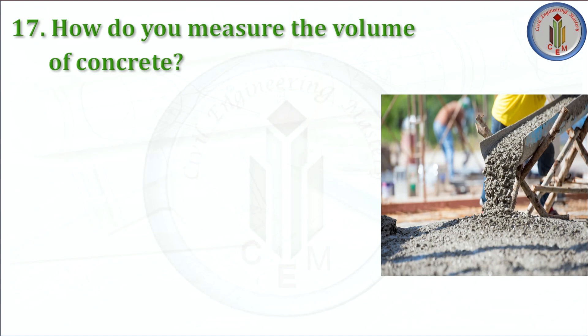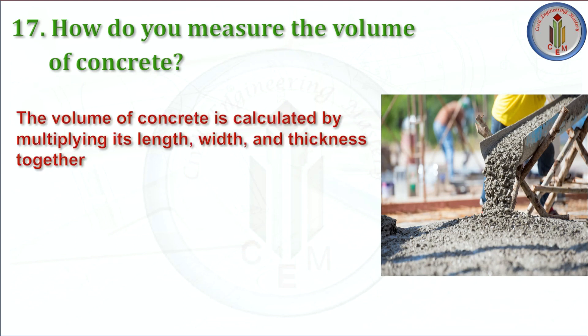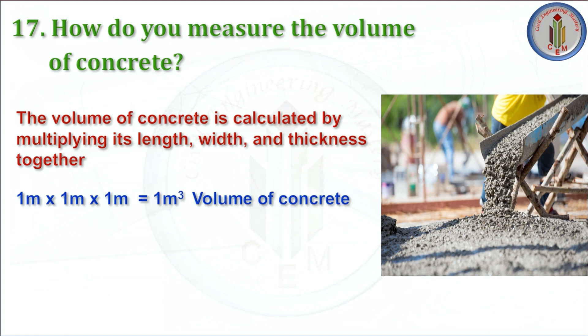Next: how do you measure the volume of concrete? The volume of concrete is calculated by multiplying its length, width, and thickness together. For example, 1 m × 1 m × 1 m gives a volume of 1 m³. To calculate the volume of a slab, multiply length, breadth, and depth (thickness of the slab) together. Similarly, you can calculate for all other structural members using length, width, and depth.